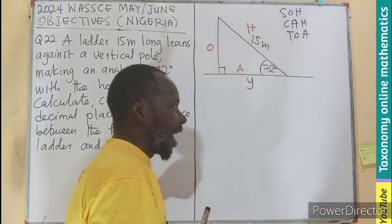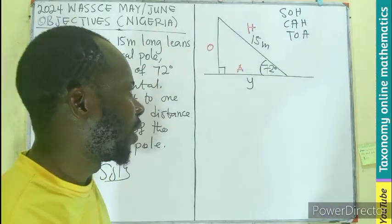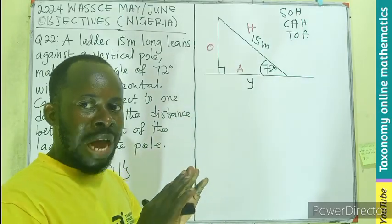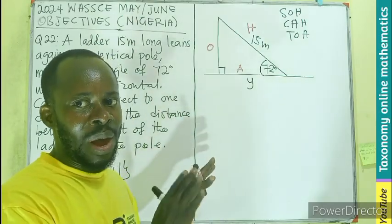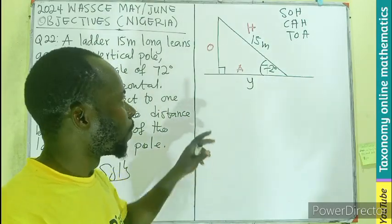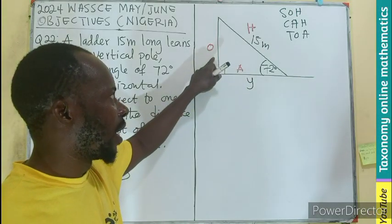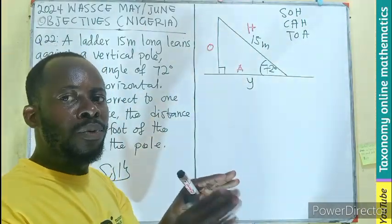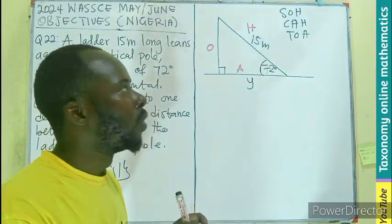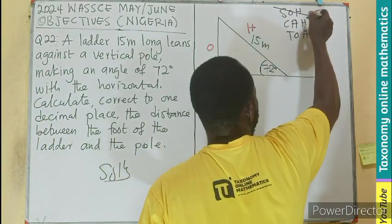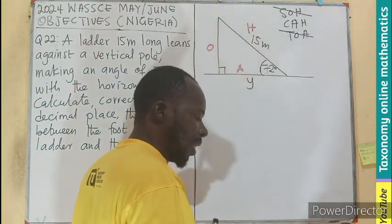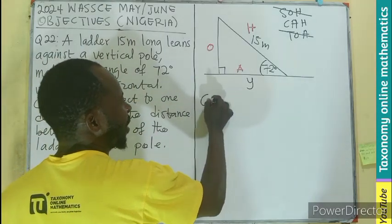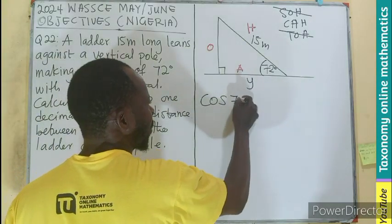Using our SOH-CAH-TOA acronym, we cross out the parts of the triangle not in use. We don't have anything for the opposite side, so we cross out all acronyms containing O. That leaves us with only CAH, which is cosine of the angle in question.